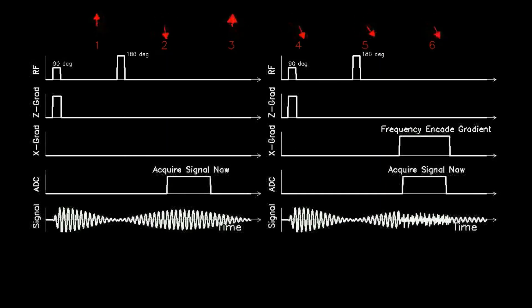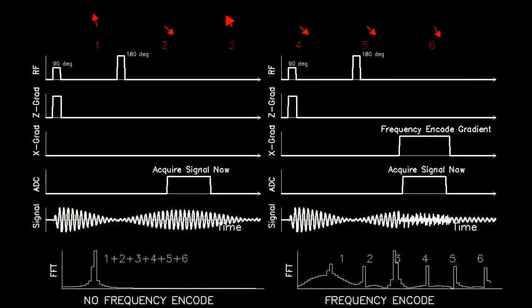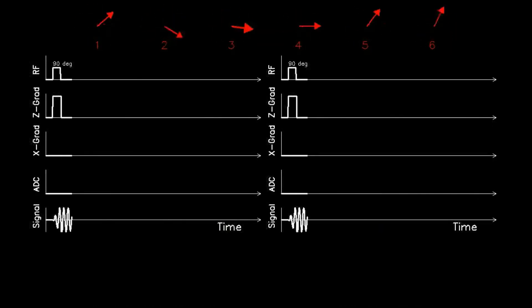The left-hand spectrum only shows one peak since a frequency gradient was not applied and therefore a Fourier transform will not separate the six components.